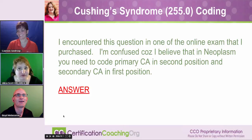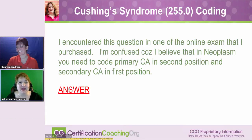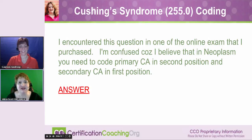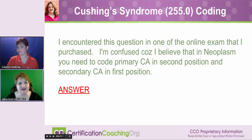Cushing syndrome — the code for that is 255.0. The question was encountered in one of the online exams I purchased. I'm confused because I believe that in neoplasm coding, you need to code the primary cancer in the second position and the secondary cancer in the first position, which is true for the most part, but this case is a little bit different.